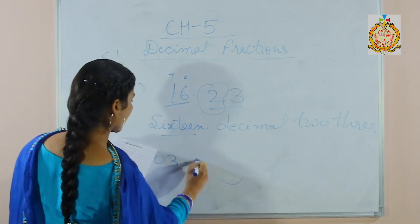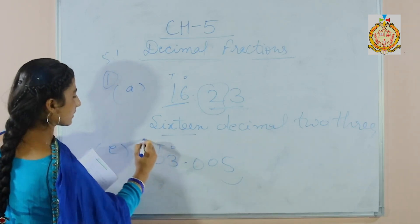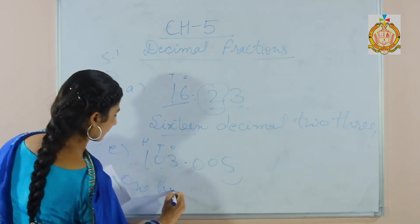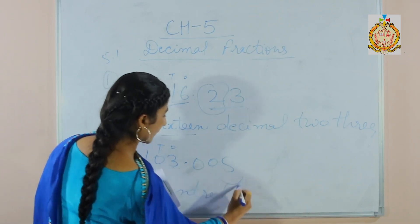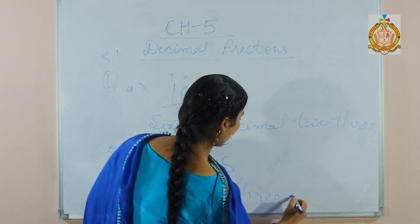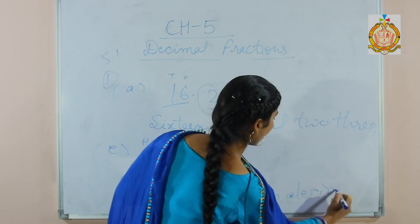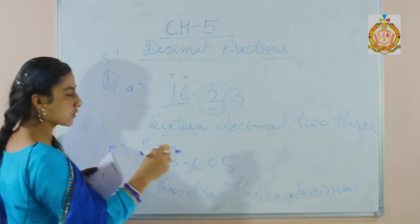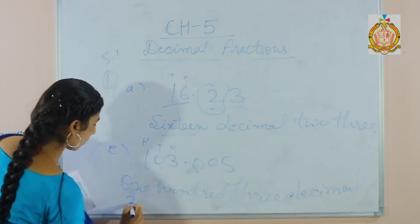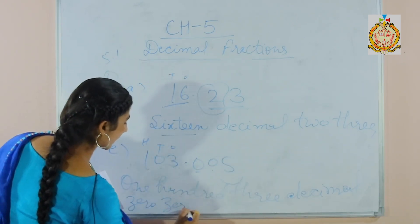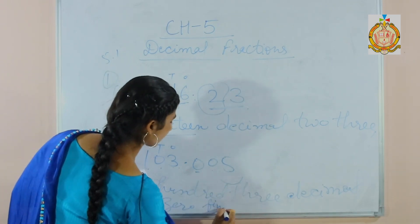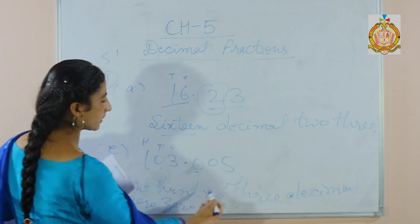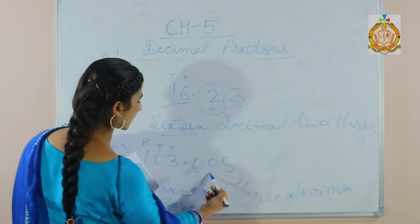Part E: 103.005. Its whole number name is 103, then decimal. After the decimal there are three digits — give a name to them separately: 0, 0, 5. So this is the name of this decimal fraction: 103 decimal 0, 0, 5.